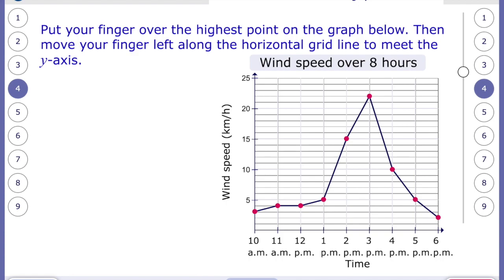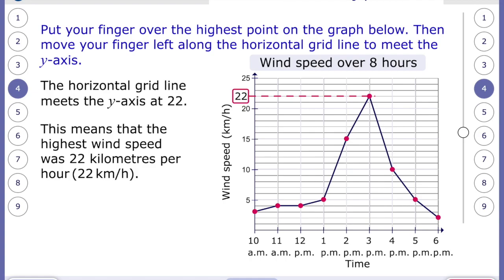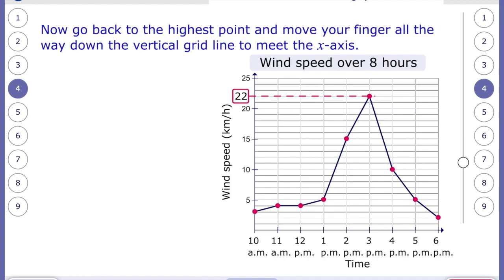So you put your finger over the highest point on the graph below. And then you move your finger left along the horizontal grid to meet the y-axis. And the horizontal grid line meets the y-axis at 22. This means that the highest wind speed was 22 km per hour. Now go back to the highest point and move your finger all the way down the vertical grid line to meet the x-axis. And the vertical grid line meets the x-axis at 3 p.m.